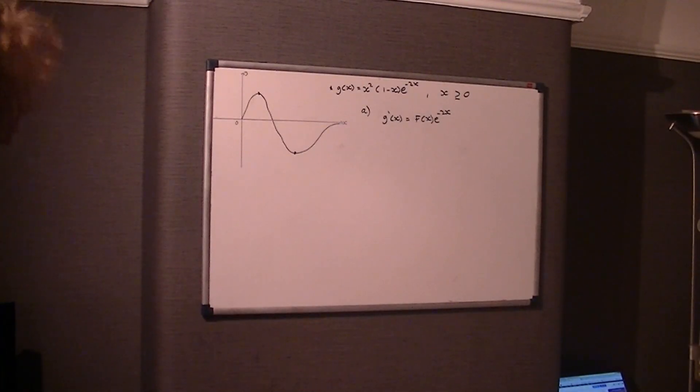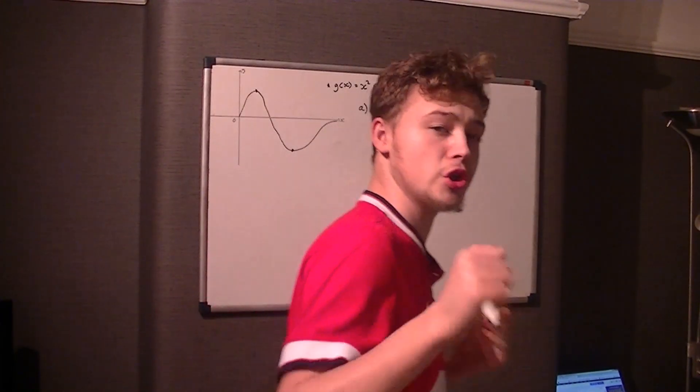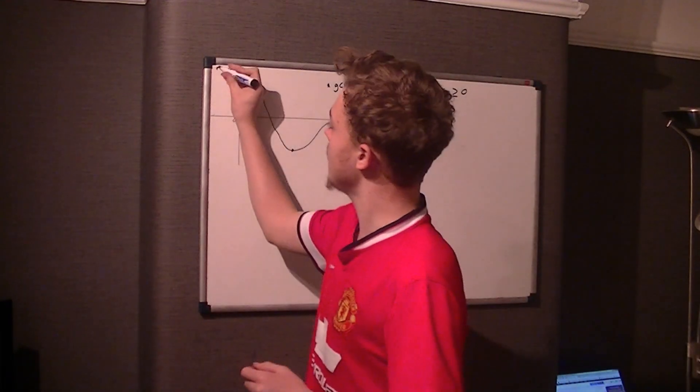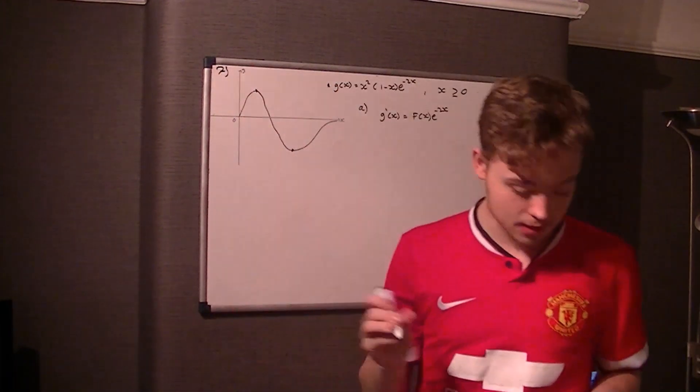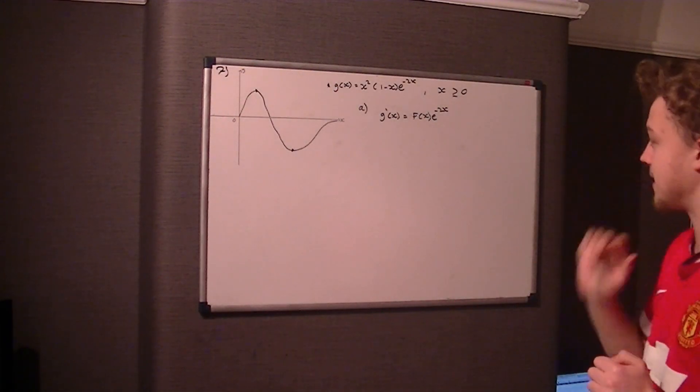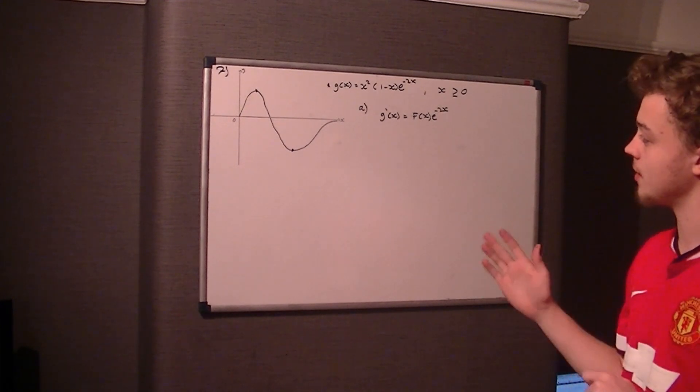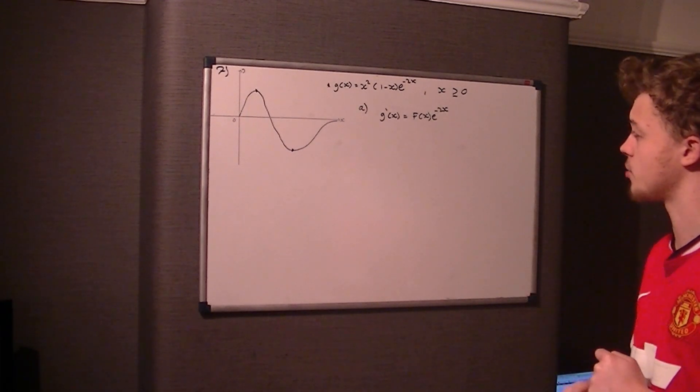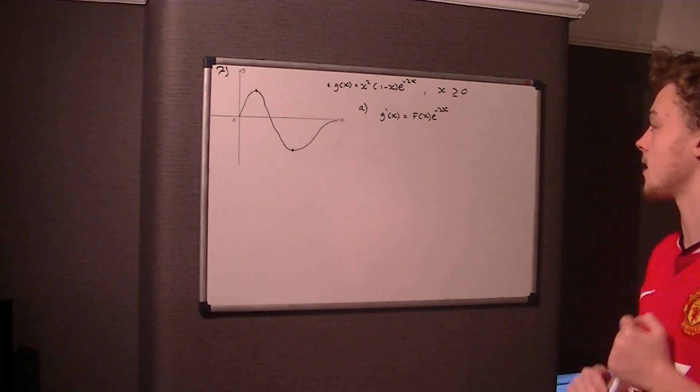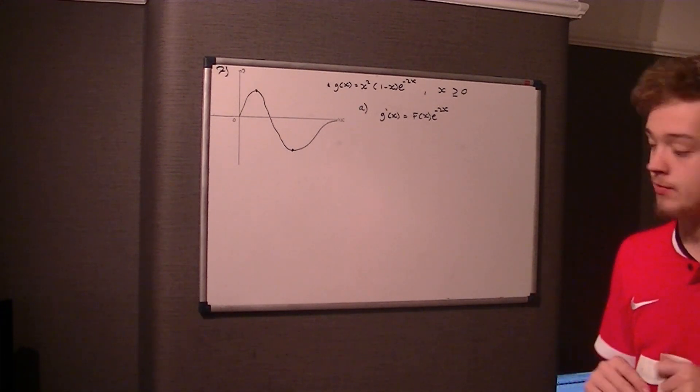Welcome, this is now question 7 for an Excel C3 June 2015 paper. We're given this graph, it's called g of x and it's got function x squared times 1 take x, times e to the power of negative 2x.